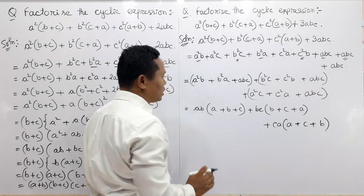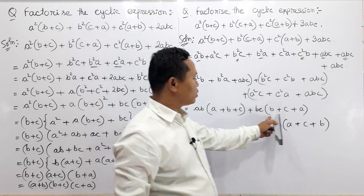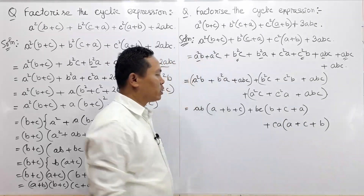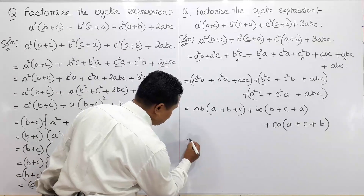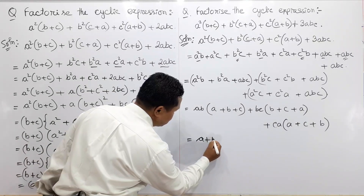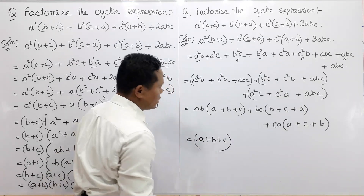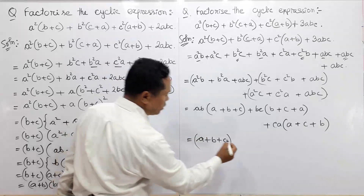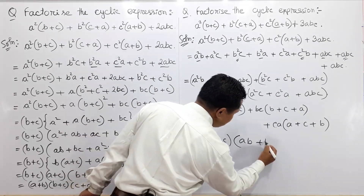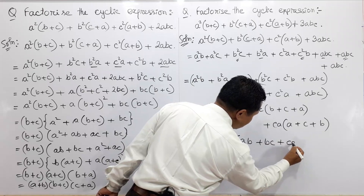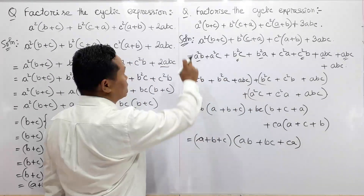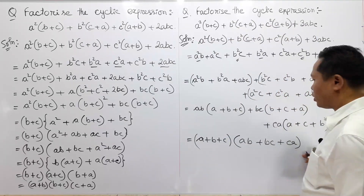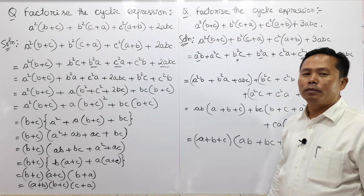We will be using our hands. I'm going to put this on the left side. A plus B plus C is available to us. Then we will put this on the left side: AB plus BC plus CA.